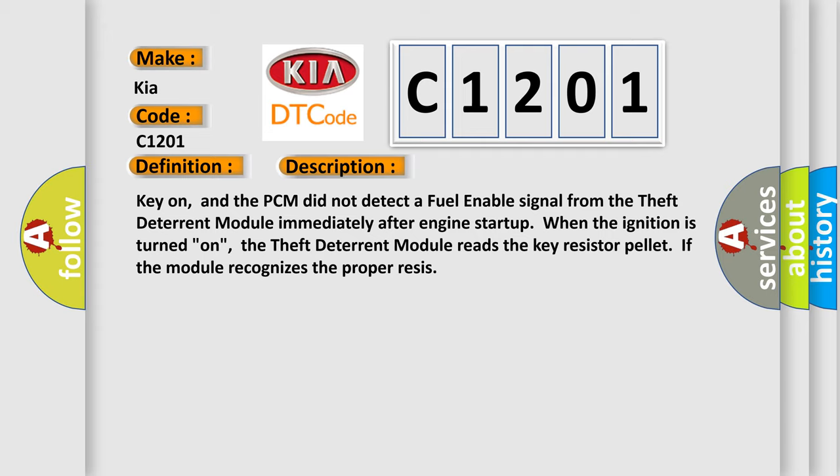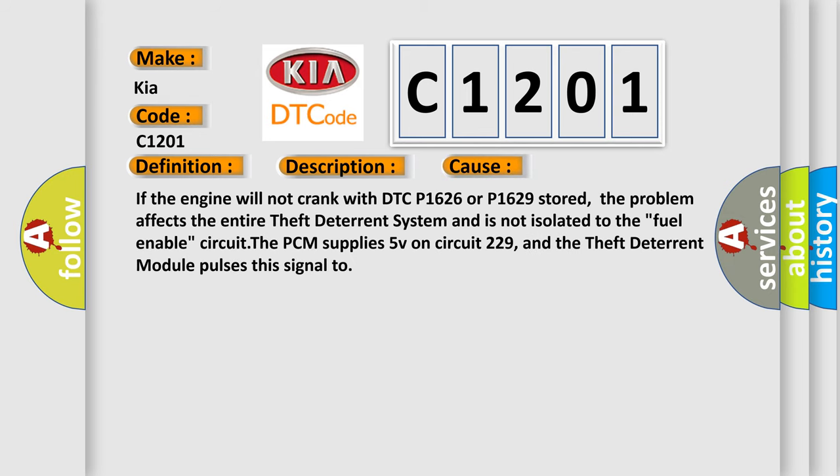This diagnostic error occurs most often in these cases: If the engine will not crank with DTC P1626 or P1629 stored, the problem affects the entire theft deterrent system and is not isolated to the fuel-enabled circuit. The PCM supplies 5V on circuit 229, and the theft deterrent module pulses this signal.